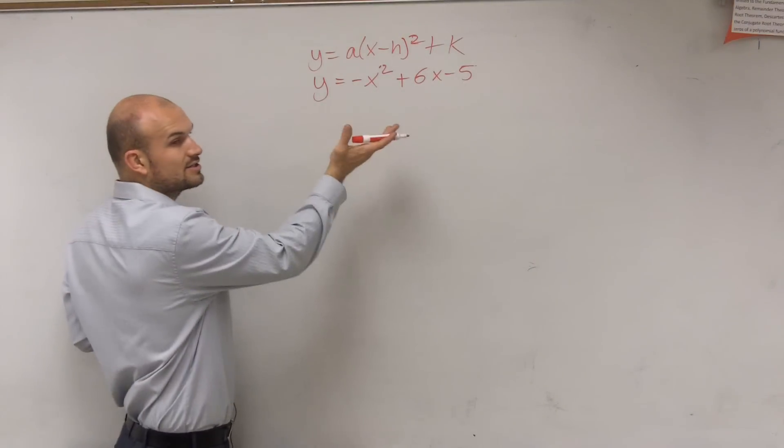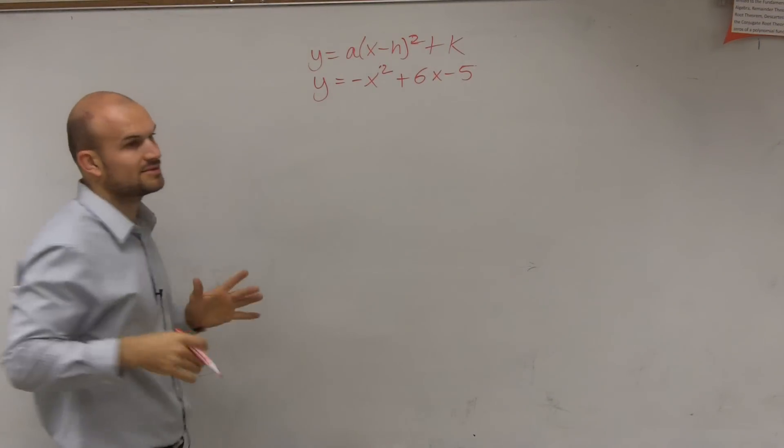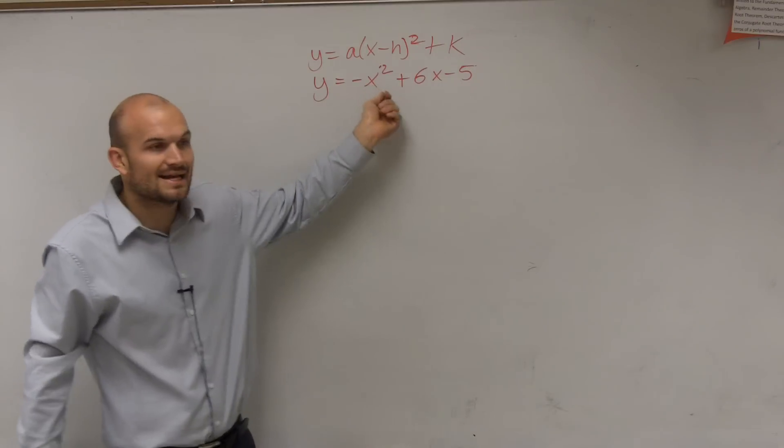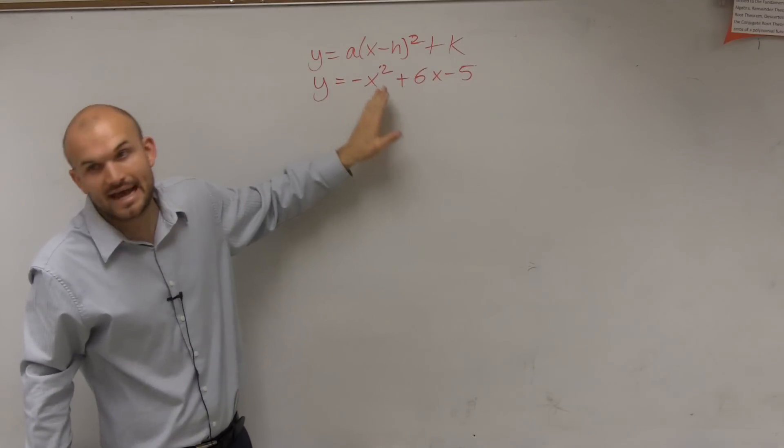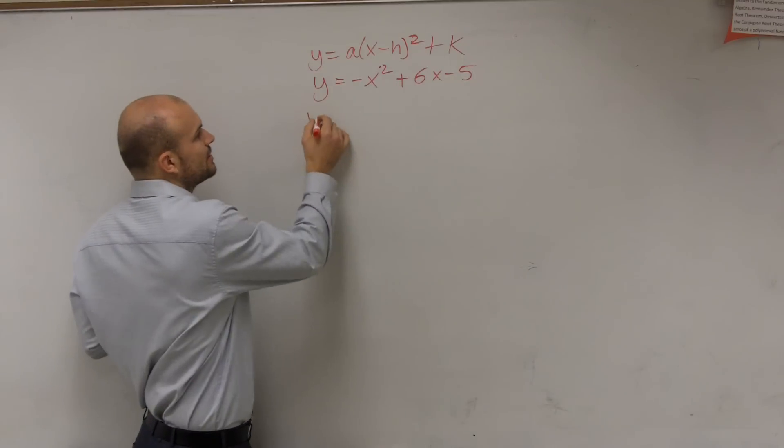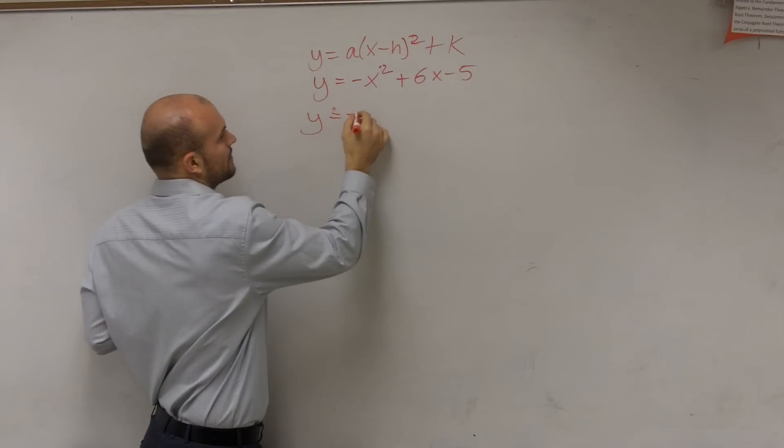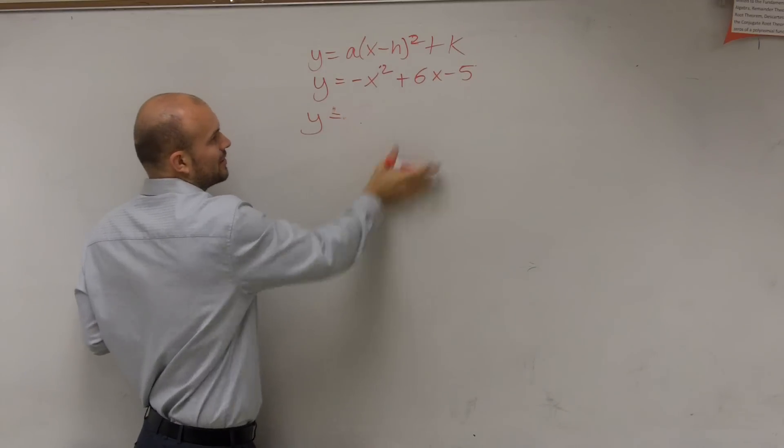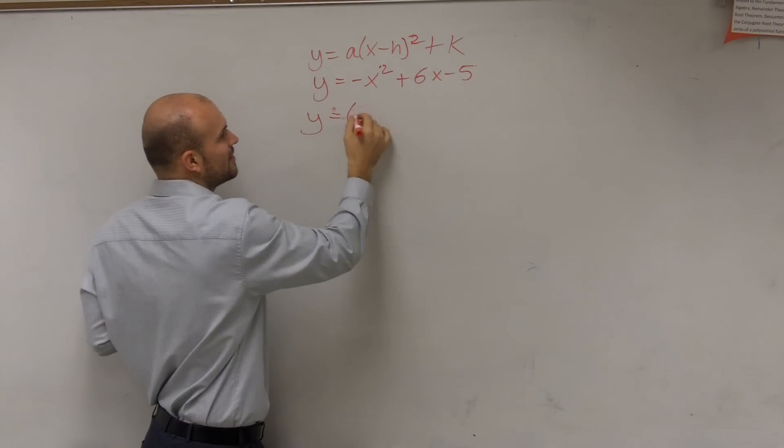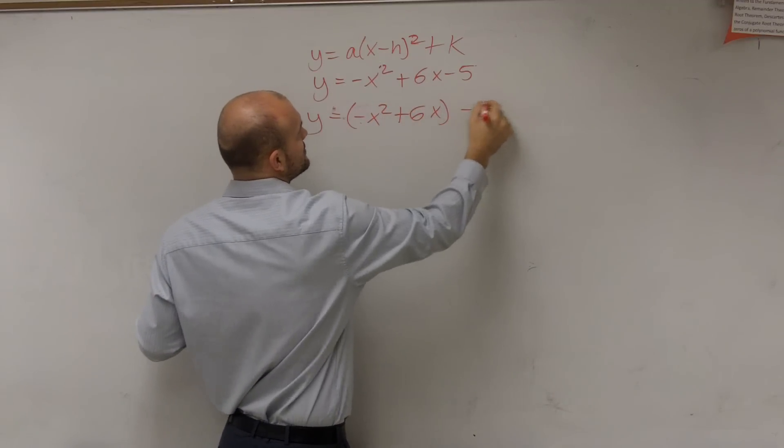Remember, ladies and gentlemen, to complete the square, we cannot have anything as a except for 1. So here I have a negative 1. So the first thing I'm going to do is subtract out a negative 1. I'm sorry, first thing I'm going to do is I'm going to want to complete the square out of my first two terms. So let's just put parentheses around those first two terms.